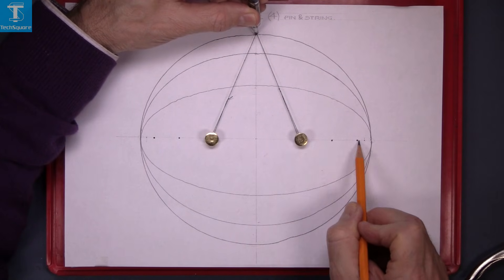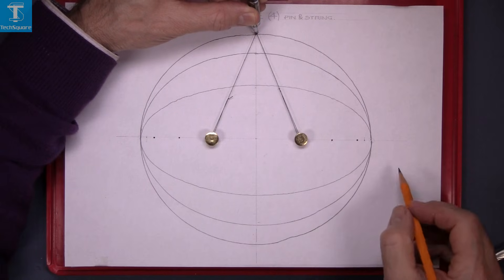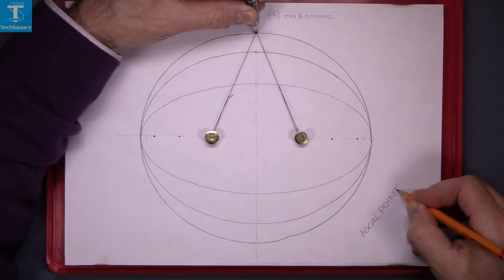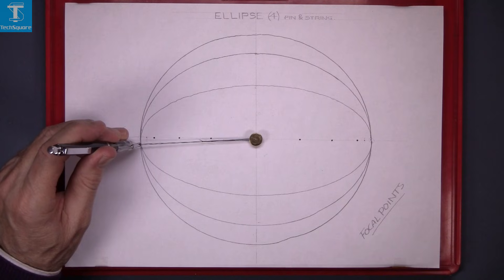Now these points here are called the focal points. There are two focal points on each ellipse.